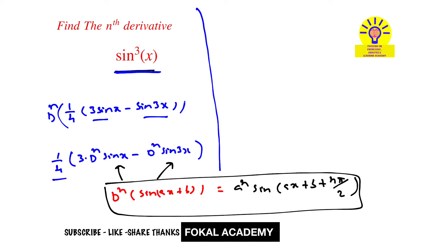1 by 4 into nth derivative of sin x, and 3 is constant, 3 into, now apply this formula here. So in this formula, here a equals 1 and b equals 0, so this becomes sin of x plus n pi by 2 minus...